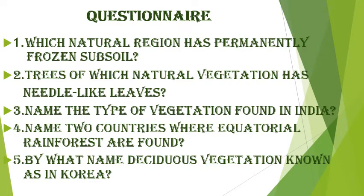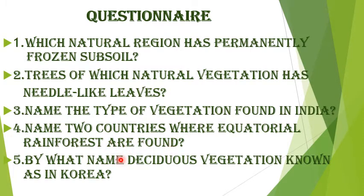I will give you time to answer these questions and we will discuss them later. First question: which natural region has permanently frozen subsoil? Second: trees of which natural vegetation have needle-like leaves? Third: name the type of vegetation found in India. Fourth: name two countries where equatorial rainforests are found. Fifth: by what name is this vegetation known in Korea? I will give you five minutes to write down these answers. We will discuss them. Thank you children for the class.